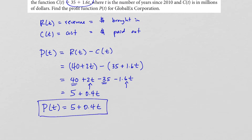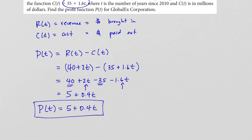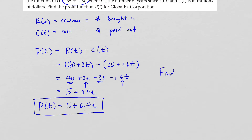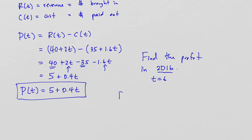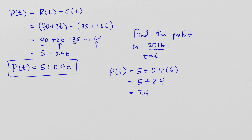So the profit function P(T) = 5 + 0.4T, in millions of dollars. For example, to find the profit in 2016, T = 6 (years since 2010). So P(6) = 5 + 0.4·6 = 5 + 2.4 = 7.4. In 2016, the profit is 7.4 million dollars.